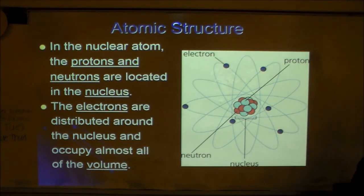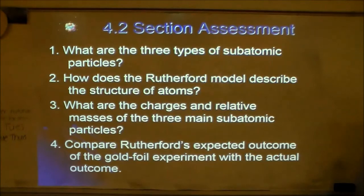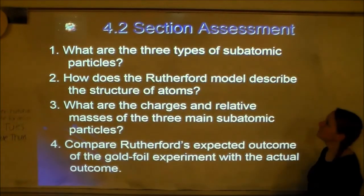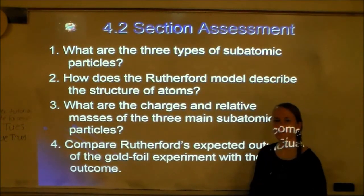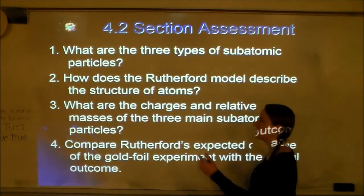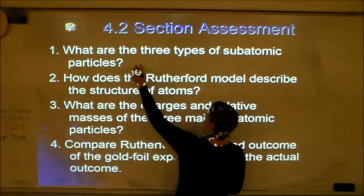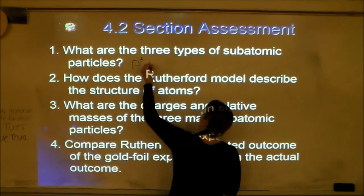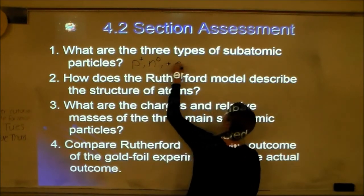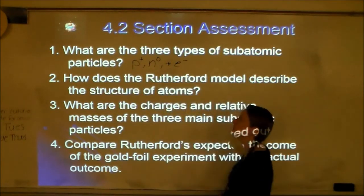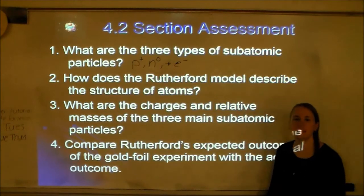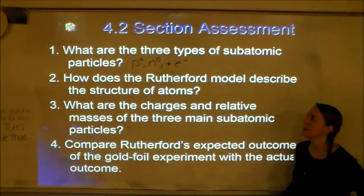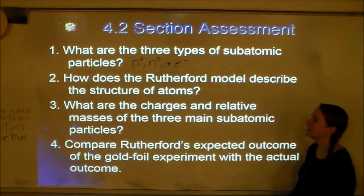Now let's knock out the section assessment. What are the three types of subatomic particles? Hopefully you could have answered that before taking this class — proton, neutron, and electron. Using abbreviations: P+, N⁰, and E⁻.